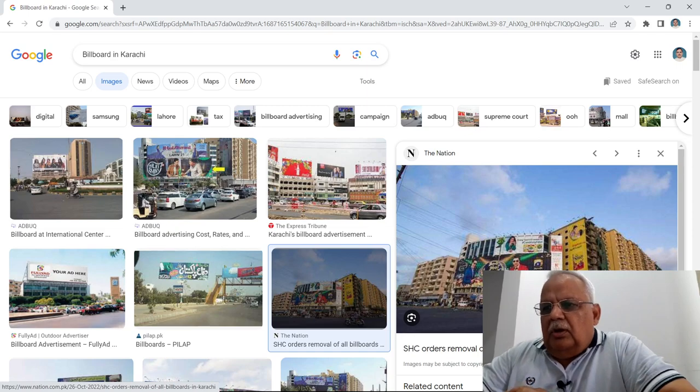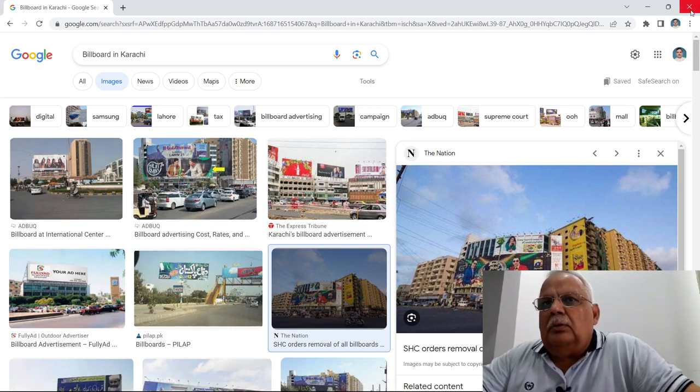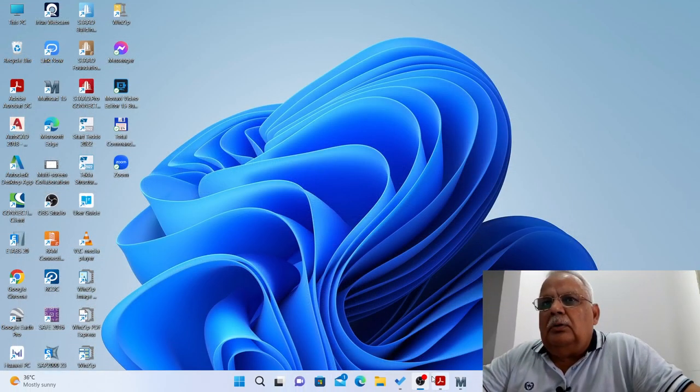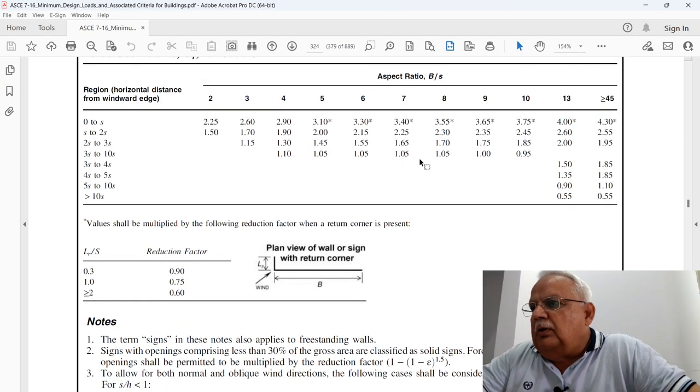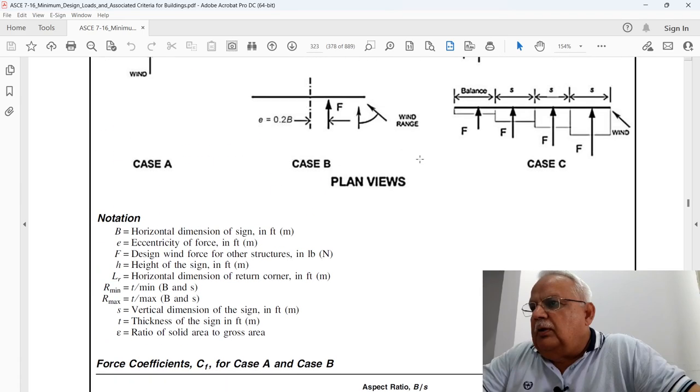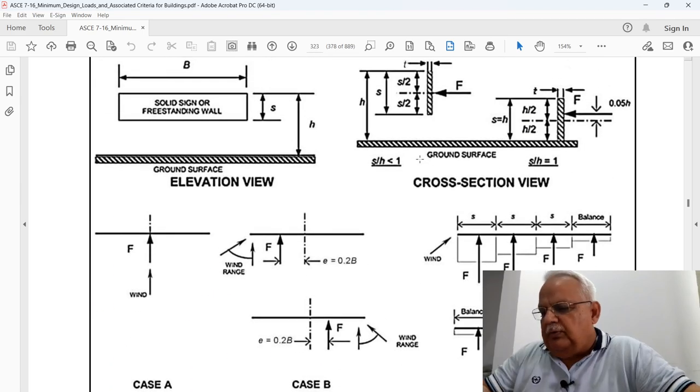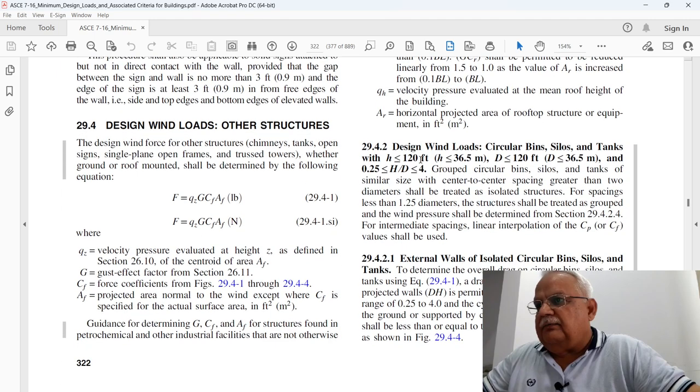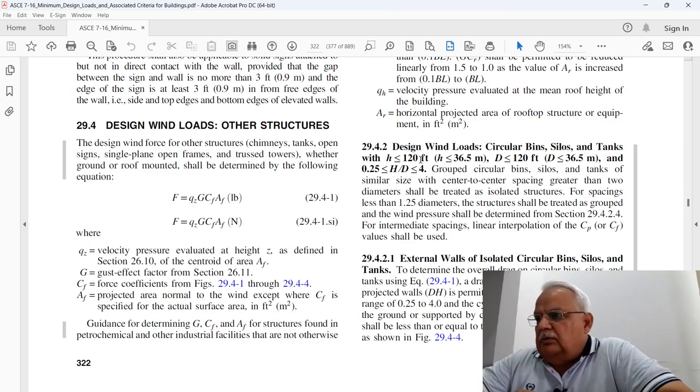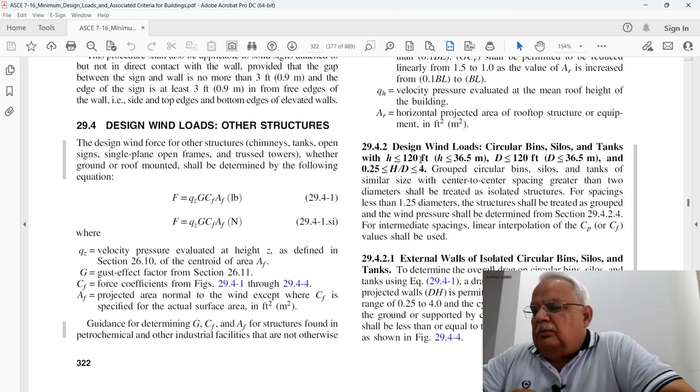You can see the size of this billboard as compared to the building in the background. That means this billboard is huge in dimension. But the question is, are these billboards properly designed? God knows. I do not know if it is properly designed and reviewed and checked. Then I am pretty sure that during any cyclone or windstorm this billboard will be safe enough.